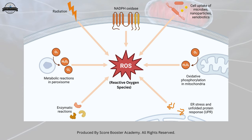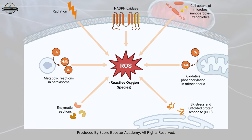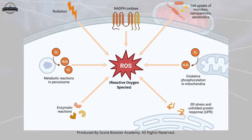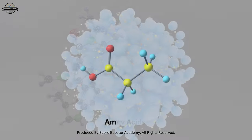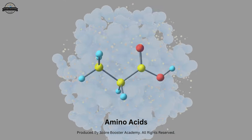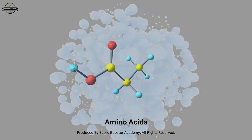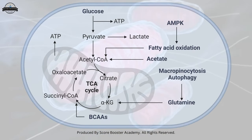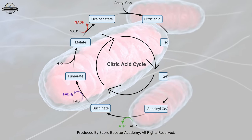Mitochondria participate in the metabolism of various molecules beyond glucose. They can metabolize fatty acids, amino acids, and other organic compounds to generate energy through processes like beta-oxidation and the citric acid cycle.